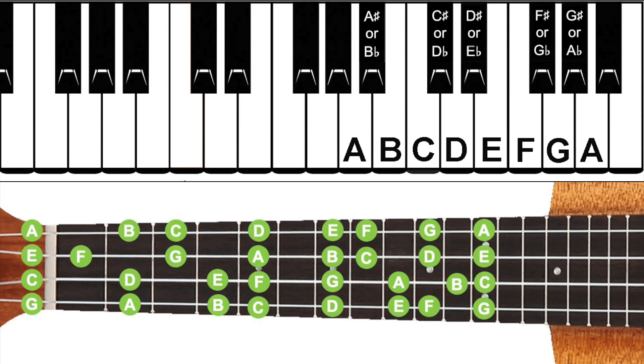You'll notice that the gaps, or intervals, between each note are the same between the notes A and B, B and C, and so on, moving up and down the fretboard on every string. They just start in a different place on each string.